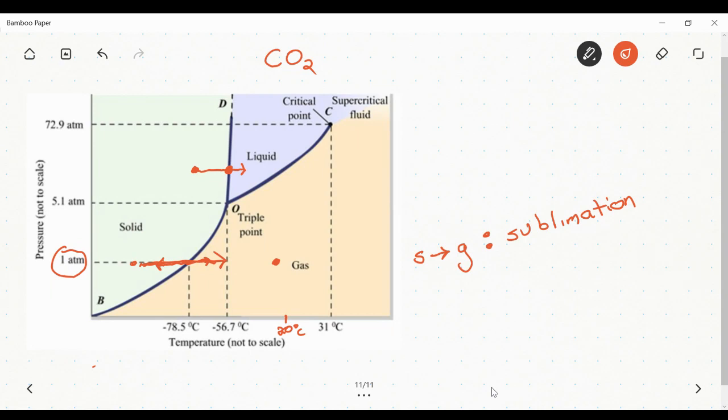And likewise, we could continue along that path and we could hit the boiling point. CO2, just like water, has a typical triple point where all three phases exist in equilibrium with one another.